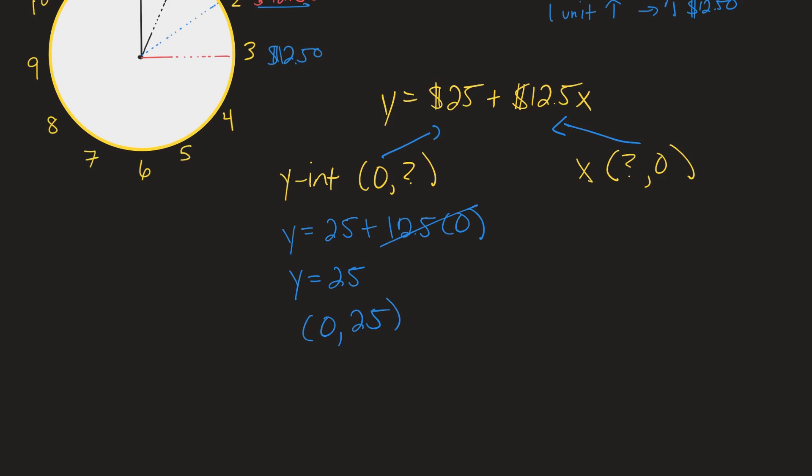Now over here we put zero in for y instead of x. So in this case it is zero equals 25 plus 12.5 x. Now remember we want to isolate x. That's what we're solving for. So we need to get 25 over to the left. So we subtract 25 from both sides. It has to be both sides to keep it balanced. 25 minus 25 is zero. On the left hand side we have negative 25 equals 12.5 x.